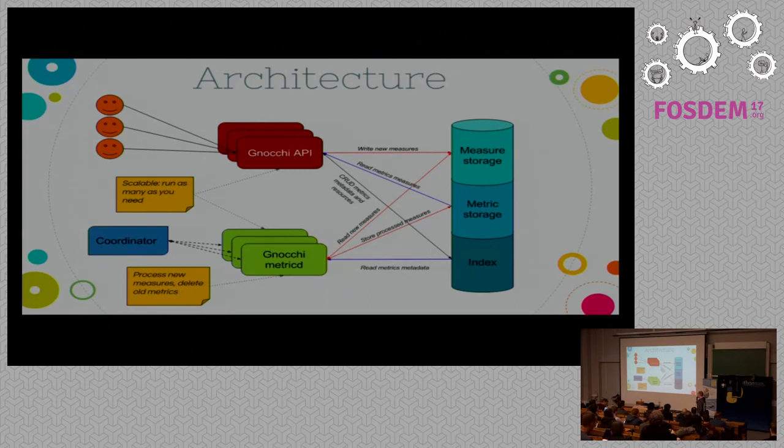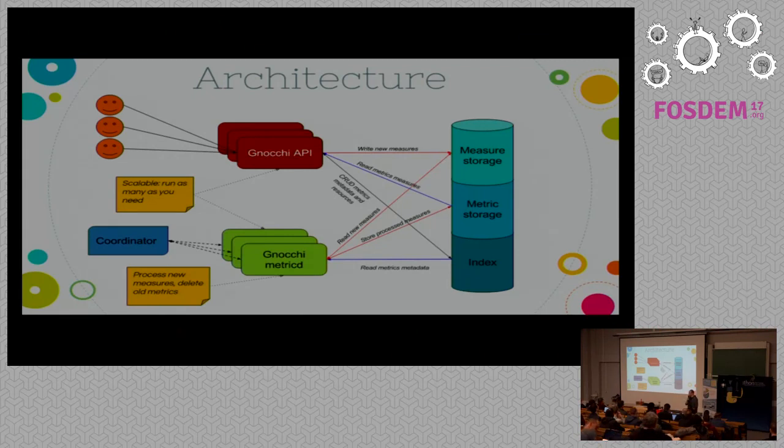So we have three different storage, which are different technologies behind. Why? Because it's all different data models. Having everything stored, for example, in SQL wouldn't work. It's like storing millions of points of timestamps in a table in SQL is not really an option and not really scalable. Metricd itself. So both the API and metricd, the daemon doing the computation, are scalable. You can run any amount of daemons that you want and you need. And they are coordinated with something that we call a coordinator, which I'll talk just after, which is also something we built in Python to help us.